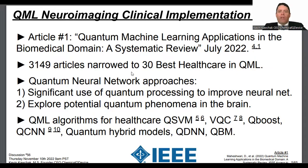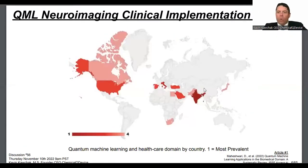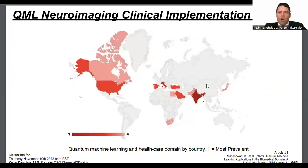It's surprising — India is number one in QML and healthcare, followed by the US and European countries as the most prevalent. This is based on the articles they looked at over a few months specifically in healthcare.